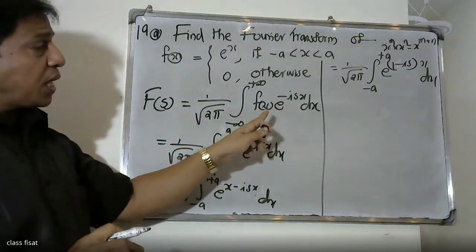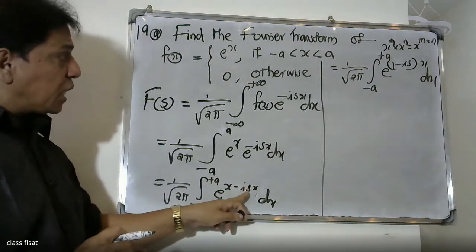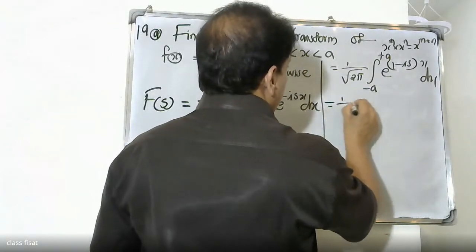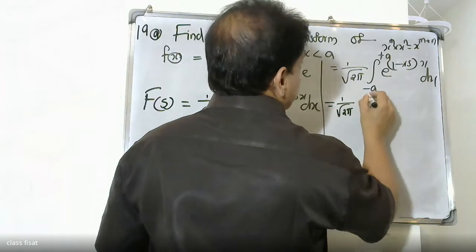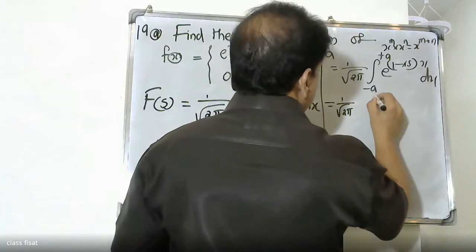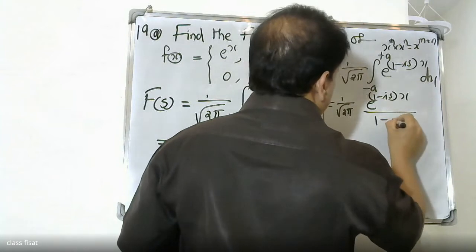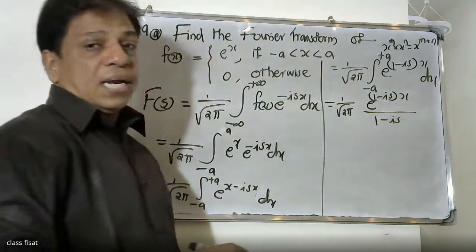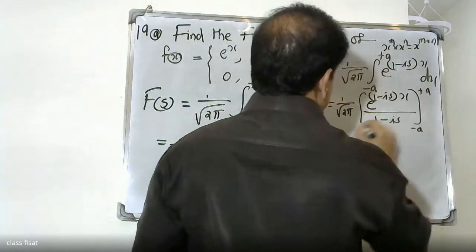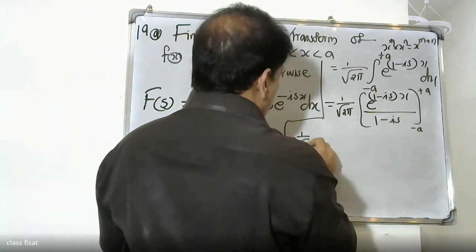So e^x times e^{-isx} equals e^{(1-is)x}, where (1-is) is the coefficient. We then multiply through and take the limit, giving us (1/√2π) times the integral of e^{(1-is)x} divided by (1-is).